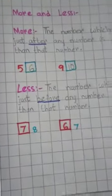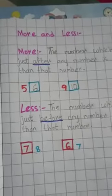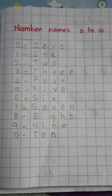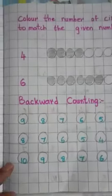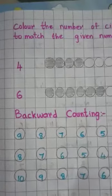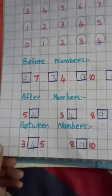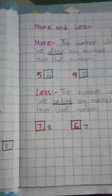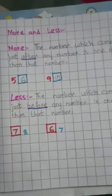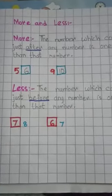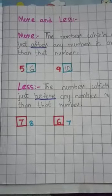So children, please write all of this in your maths book: numbers from 0 to 100, number names from 0 to 10, counting and coloring, backward counting, forward counting, before numbers, after numbers, between numbers, and more and less. This was your first lesson — be ready for the next class. Thank you.